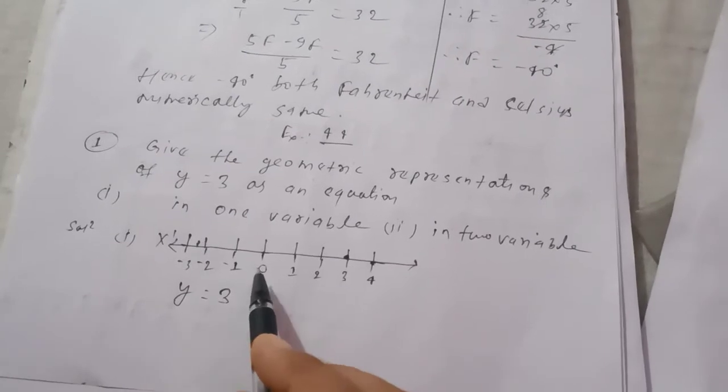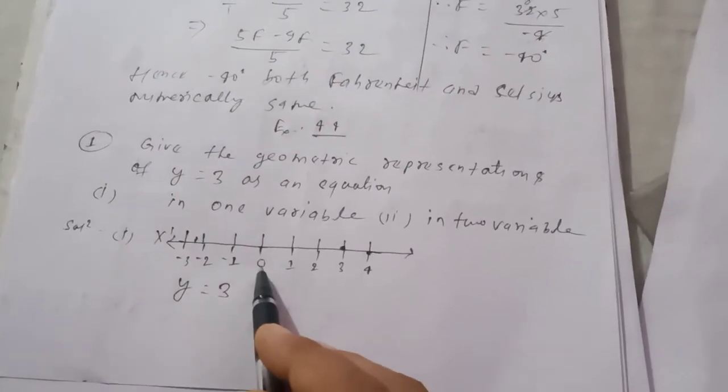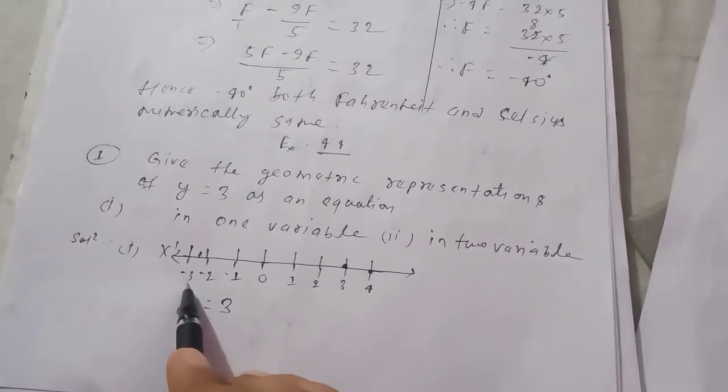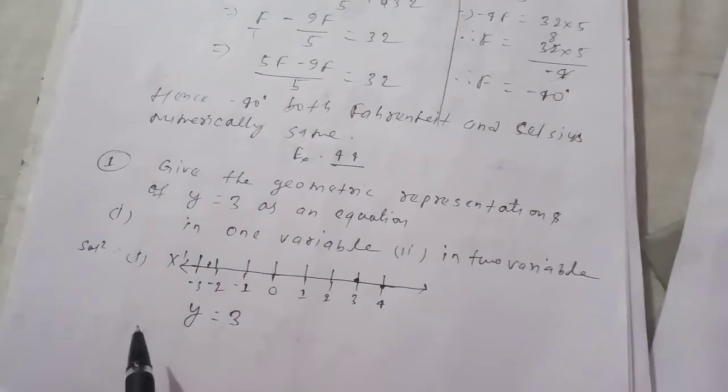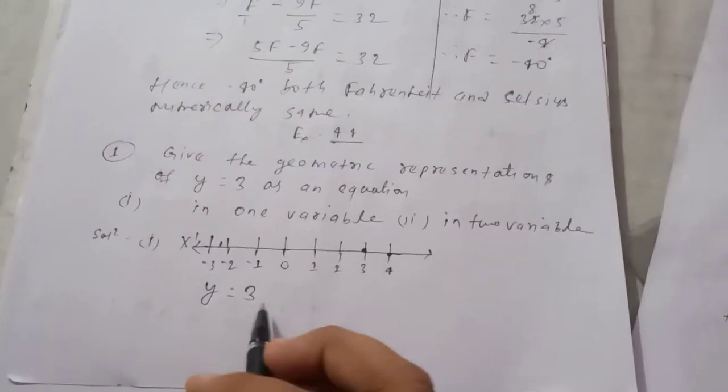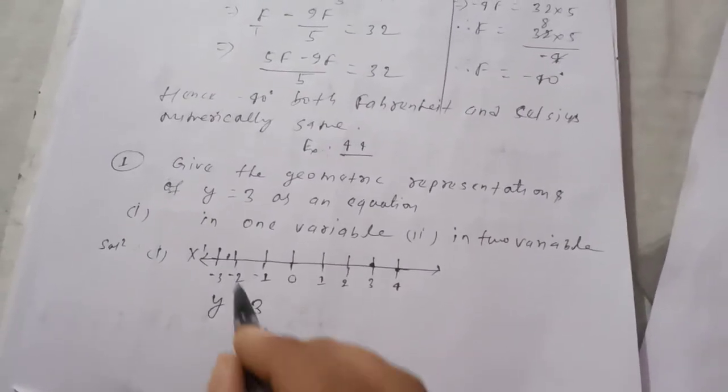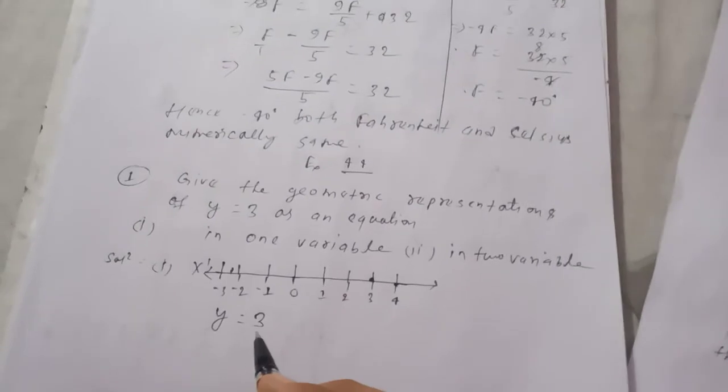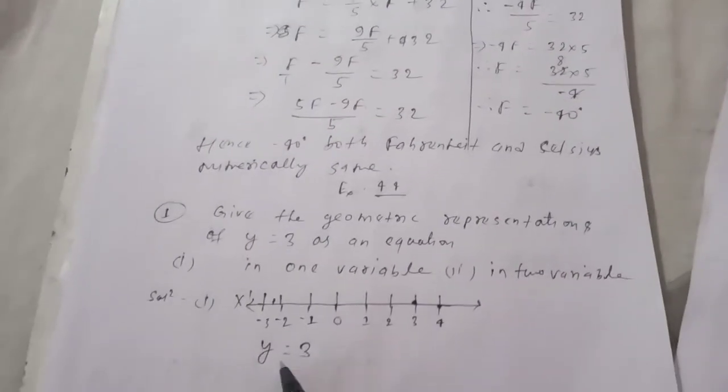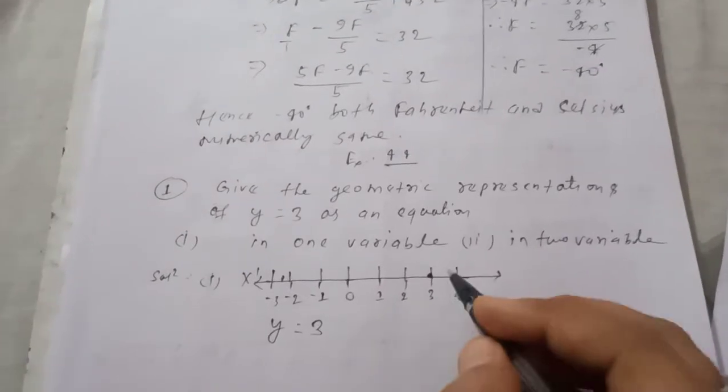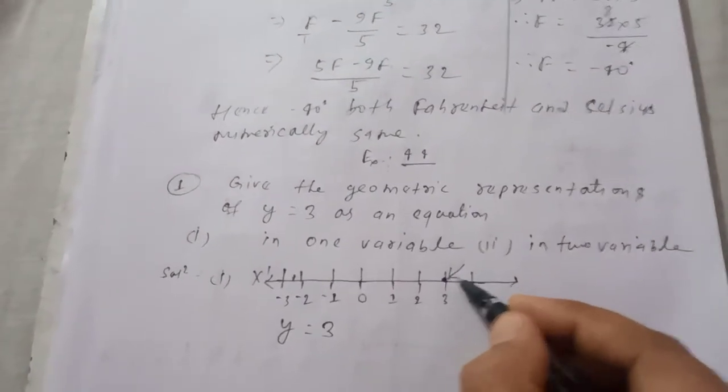then you will know the number line representation of the integer. It is zero and the right side is positive or left side is negative. If y equal to 3 is given, then this representation of y equal to 3 is given. This is the representation on the number line.